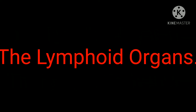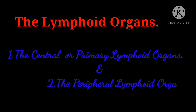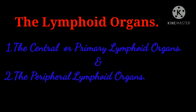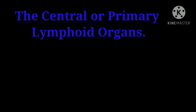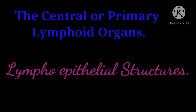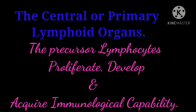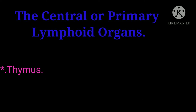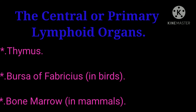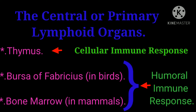The lymphoid organs. The lymphoid organs can be classified into the central or primary lymphoid organs and the peripheral lymphoid organs. The central lymphoid organs are lymphoepithelial structures in which the precursor lymphocytes proliferate, develop and acquire immunological capability. The thymus and the bursa of Fabricius in birds are the primary lymphoid organs, being responsible for the cellular and humoral immune responses respectively. The equivalent of the avian bursa in mammals is the bone marrow.